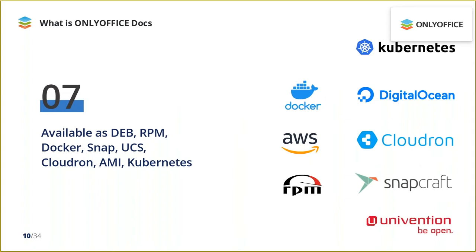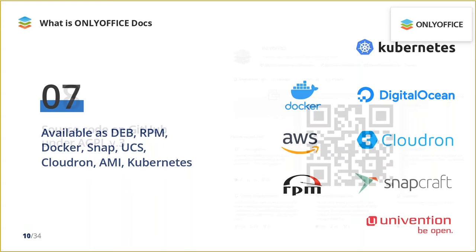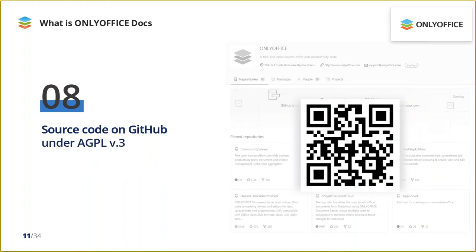OnlyOffice is available in various distribution formats and packages such as DEB, RPM, Docker, Snap, Univention Corporate Server, Cloud On, Amazon Image, and Kubernetes are also supported. OnlyOffice is distributed under the AGPL license, and the source code reports are available on GitHub — feel free to visit it.